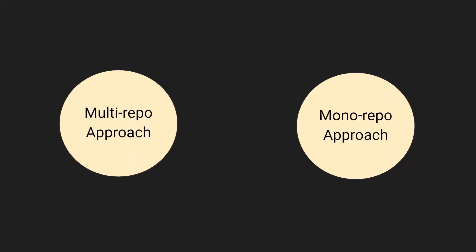A monorepo means you will have multiple JavaScript packages in one single repository, which has one main package.json file and one node_modules that is shared among all the packages. Let's look at the folder structure of each to get a better understanding.